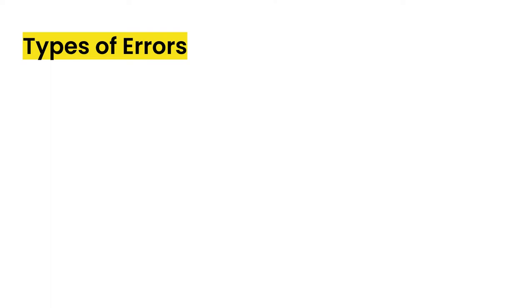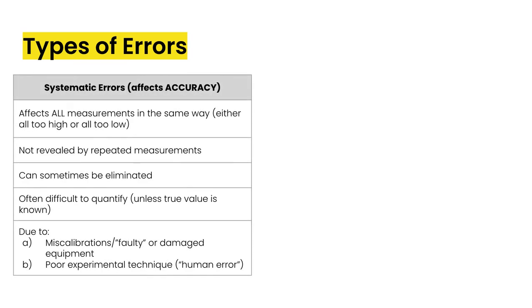In this video, we're going to take a look at the different types of errors that we might see in an experiment. And we're also going to look at how to record uncertainties and how to propagate those uncertainties through our calculations. So let's start with the types of errors.